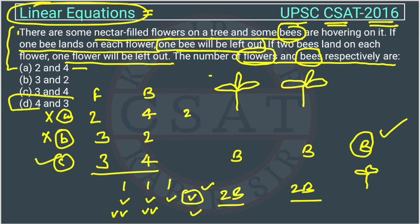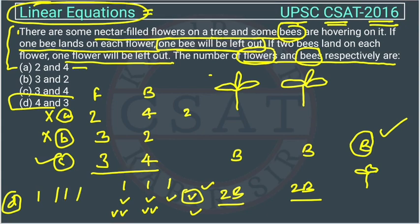Let us check option D: we are having four flowers and three bees. If we attach one bee to this flower, one bee to this flower, one bee to this flower — one flower is remaining but no bee is left out. So the first condition is not getting fulfilled here.